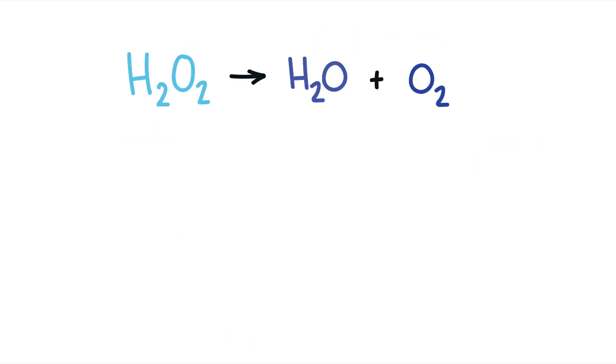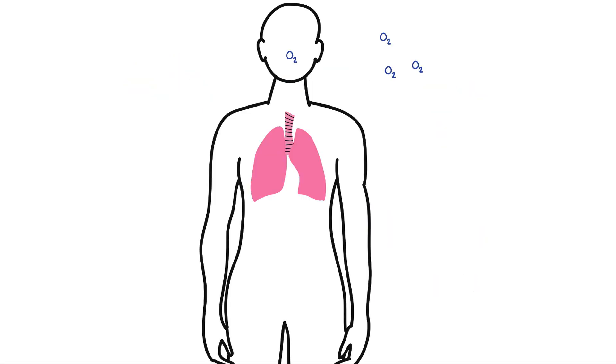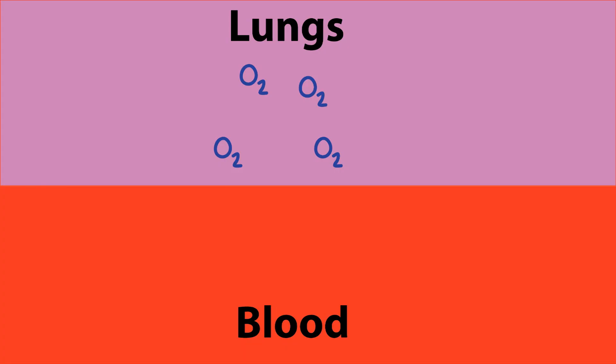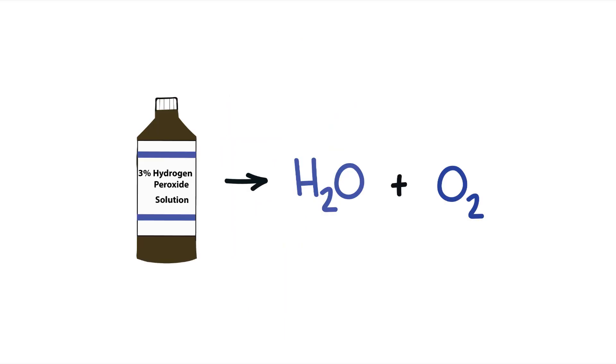Something that you have to understand is that the oxygen from the breakdown of hydrogen peroxide and the oxygen that you breathe in from the atmosphere are not used by the body in the same way. When you inhale oxygen, it gets absorbed into your blood through your lungs. This oxygen then binds to red blood cells and gets transported throughout your body.